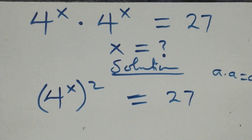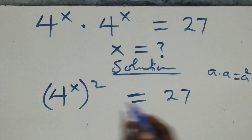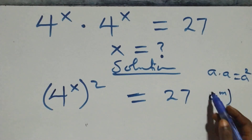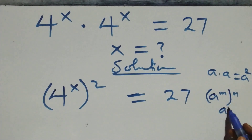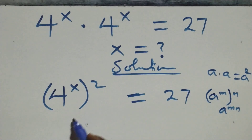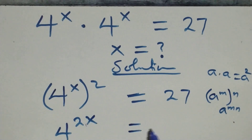This follows the rule: a raised to power n, raised to power n, is the same as a raised to power m times n. So what we have here becomes four raised to power two x equals twenty-seven.